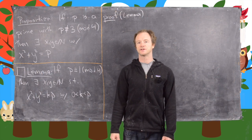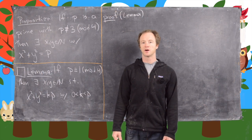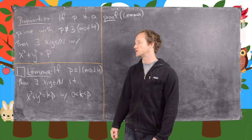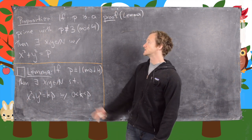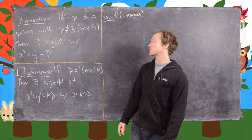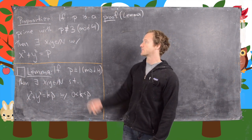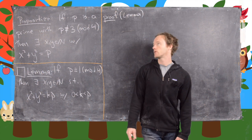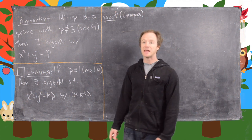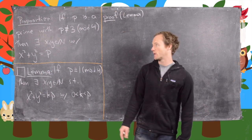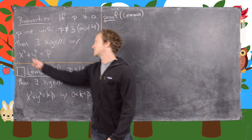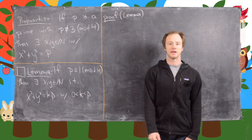This is the second in a series of videos where we're exploring when is a natural number expressible as the sum of two squares. In this video we'll be looking mostly at this proposition: if p is a prime with p not congruent to 3 mod 4, then p is expressible as the sum of two squares. In other words, there exist natural numbers x and y such that x squared plus y squared equals p.